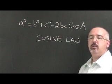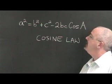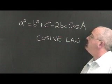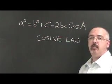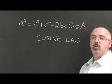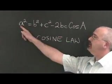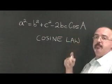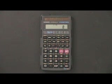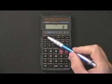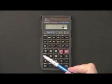The cosine law formula looks like this: A squared equals B squared plus C squared minus 2BC cosine A. Your unknown will always be either side A or angle A. Remember that your calculator has to be in degree mode whenever you do trigonometry. To get this type of calculator in degree mode, press the mode button and 4.